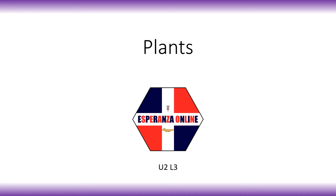Hey everyone, in this lesson we're going to be talking about plants. This is a continuation of our discussion on how we can classify different living things. A couple of lessons ago we looked at classifying living things according to the five, six, seven, or eight major kingdoms of living things, and two of those kingdoms were the animal kingdom and the plant kingdom. In the previous video we talked about how we classify animals, and in this lesson we're going to be looking at plants in general and zeroing in on photosynthesis.